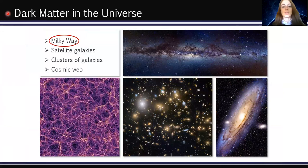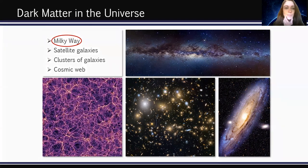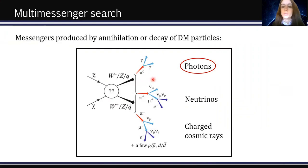Dark matter in the universe is observed to be present on different scales: in our galaxy, in the satellite galaxies of the Milky Way, in clusters of galaxies, and in the cosmic web. In our analysis we focus on the Milky Way. The entire section of dark matter searches relies on the idea that dark matter particles can annihilate or decay and produce a huge variety of astrophysical messengers — photons, neutrinos, and charged cosmic rays — that we can detect with our telescopes. In our analysis we focus on photons from annihilating dark matter.